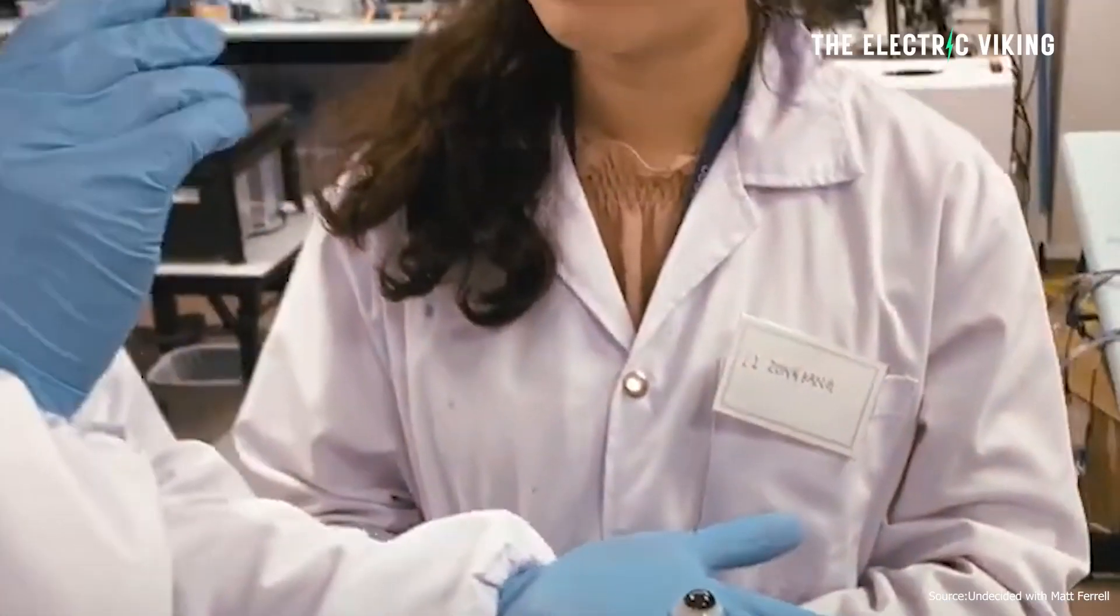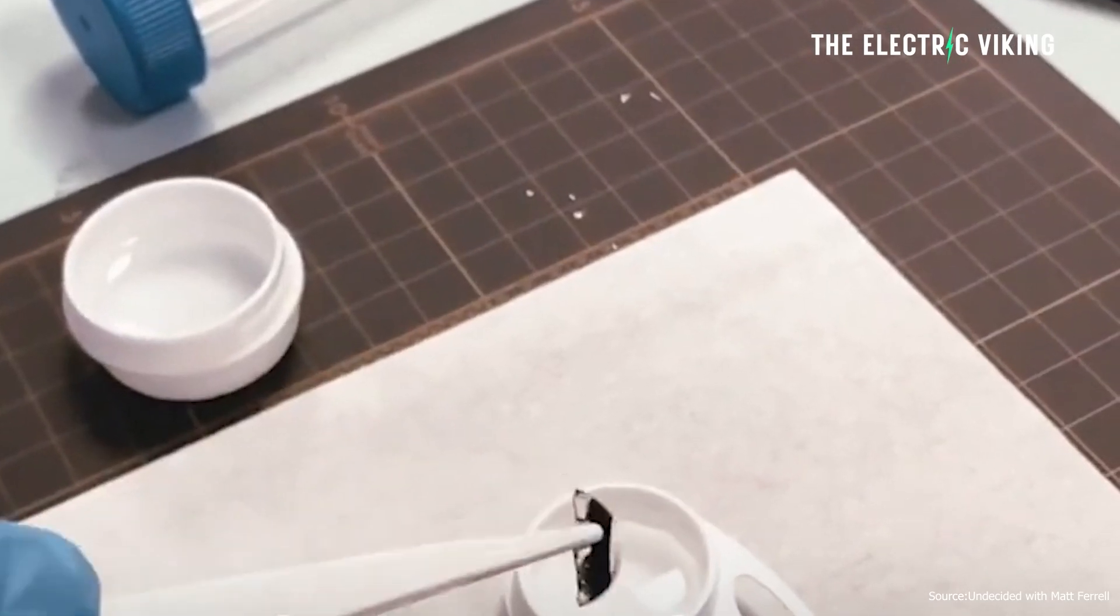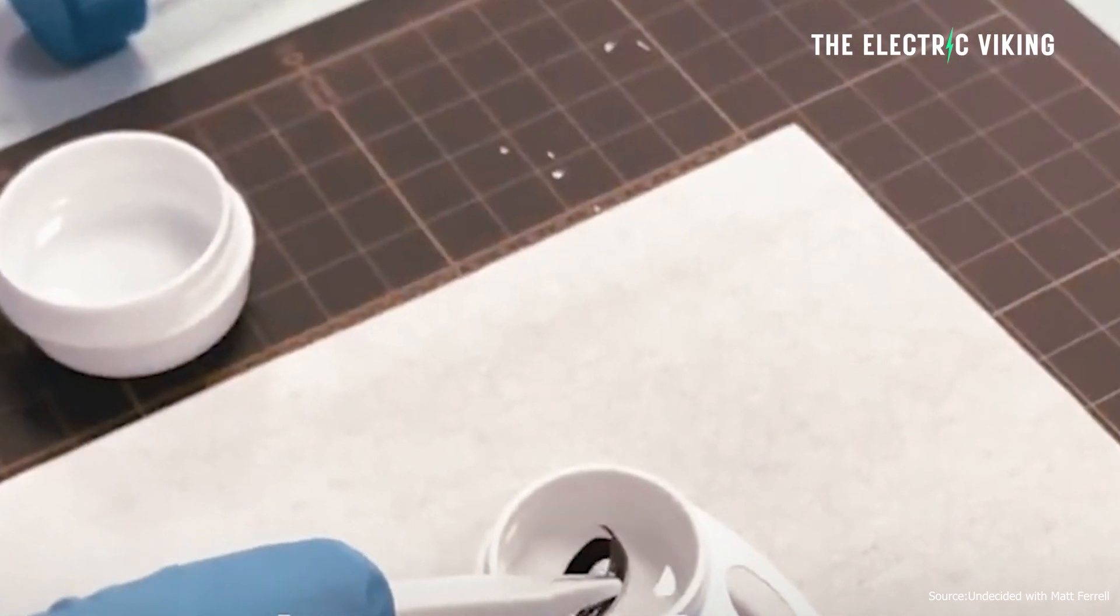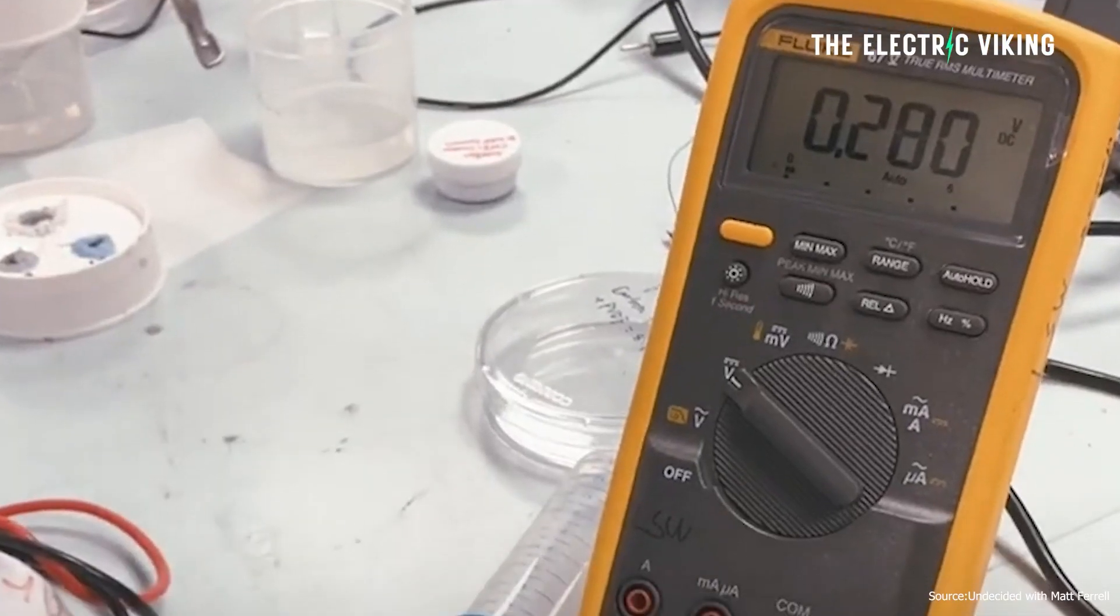Another researcher that worked on this project said this, the most common battery charging system for smart contact lenses requires metal electrodes in the lens, which are harmful if they're exposed to the naked human eye.